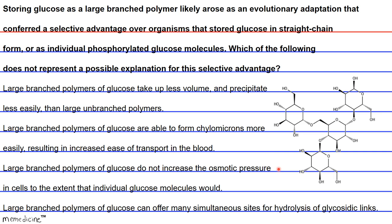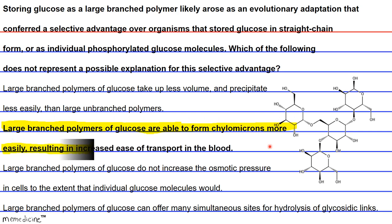And chylomicrons are lipoproteins and have nothing to do with glucose transport. So, large branched polymers of glucose do not more easily transport in the blood and do not represent a possible explanation of the selective advantage of storing glucose as glycogen.